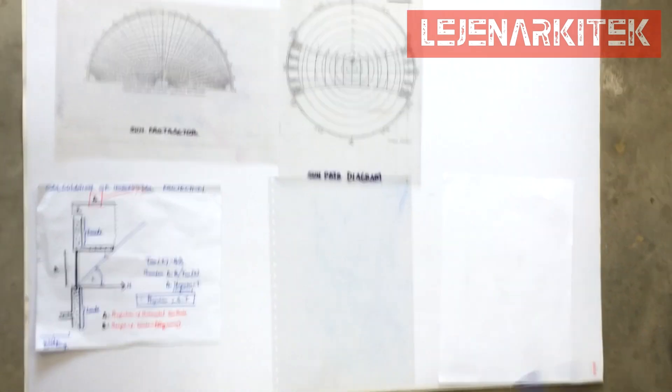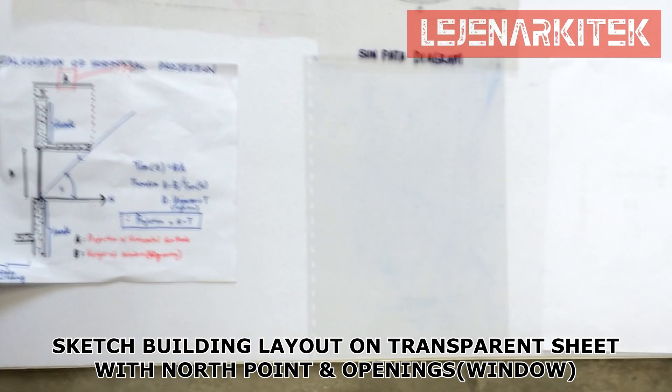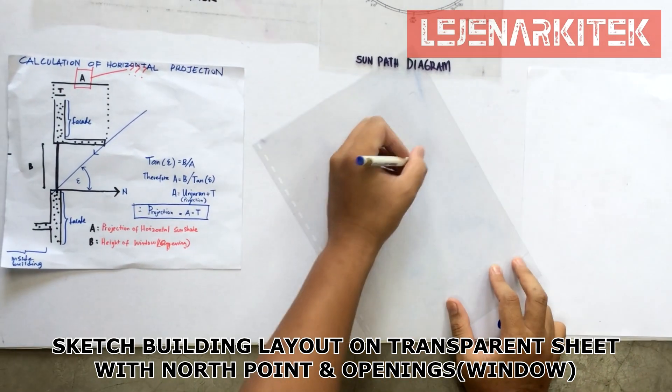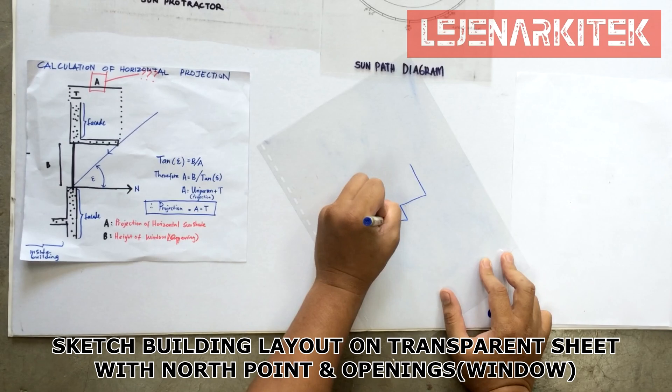Step one, we're going to sketch the building layout on the transparent paper with north orientation and opening, which is your window.